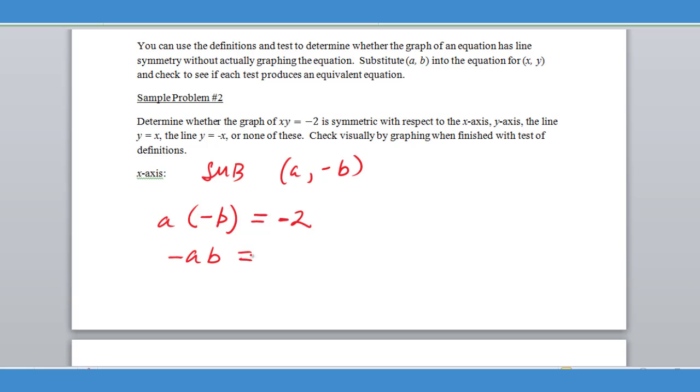And then we're going to get AB equals two, which does not equal AB equals negative two. So we could say this is not equivalent to AB equals negative two, which is what it would be if we substituted the values for X, Y. That being the case, that tells me this graph is not symmetric over the X axis. So we'll move on and test the next value.